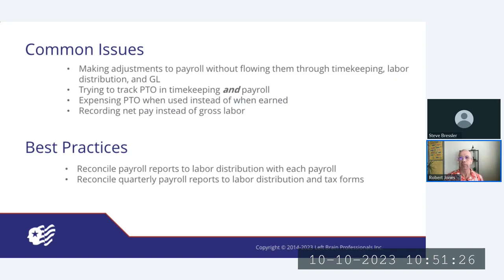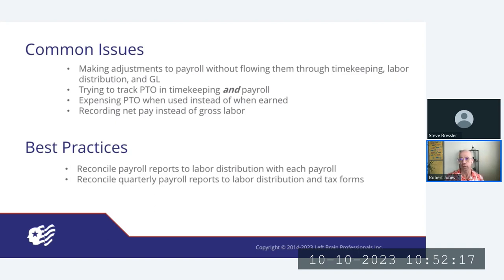We also see this with things like bonuses or PTO payout — especially at termination or PTO buyback — where people make changes in payroll but forget to flow them through the other side. Trying to track PTO in both timekeeping and payroll and keep those two systems in sync is a nightmare — we rarely find anybody who does keep it in sync, and anyone who is doing it is usually complaining about the process. We recommend that you do timekeeping including PTO in your general ledger — most systems are integrated now — and maintain the balances there without trying to synchronize hourly balances with payroll.